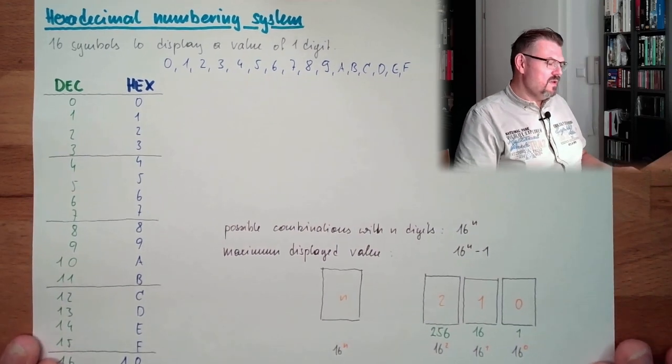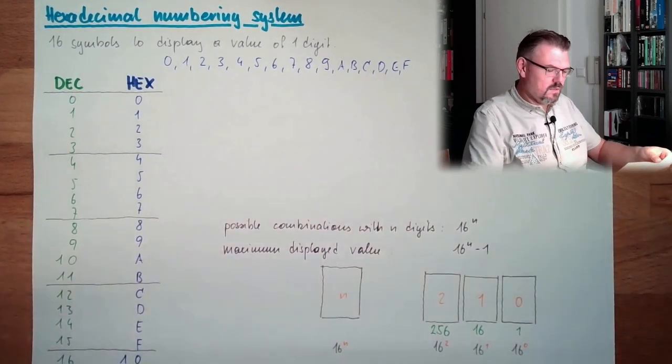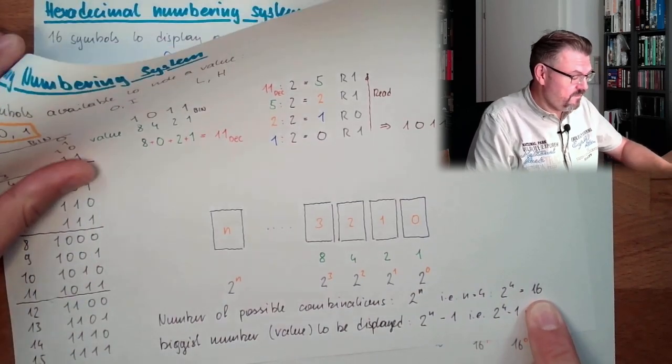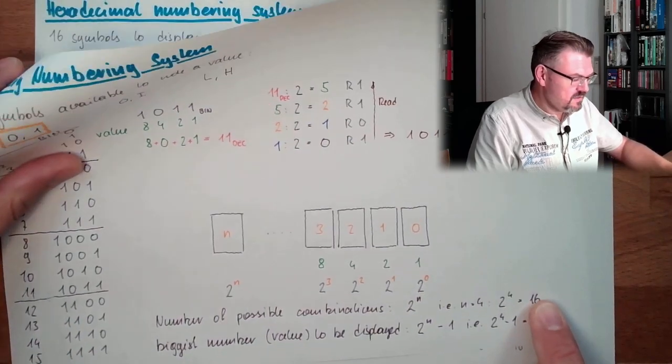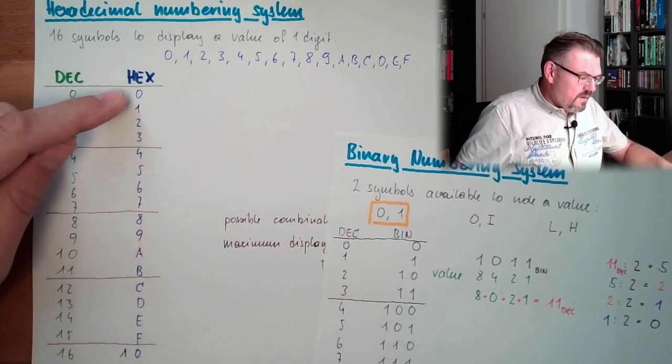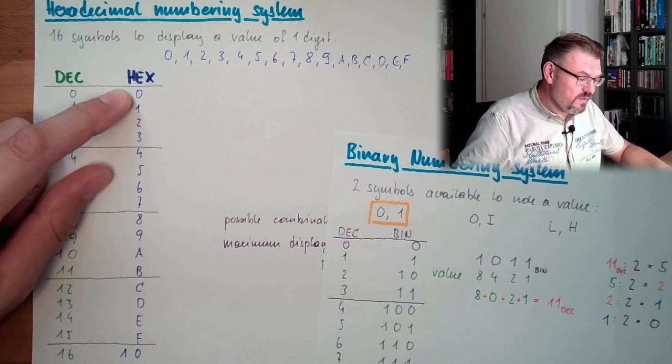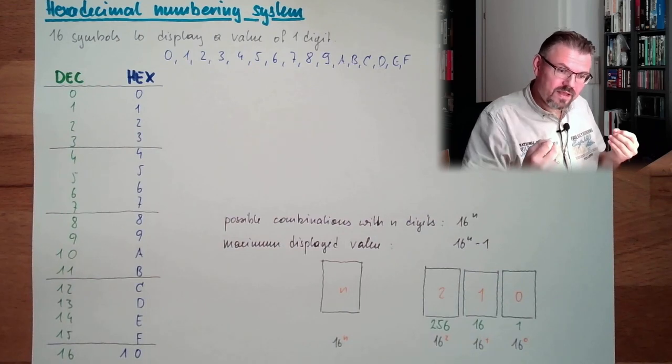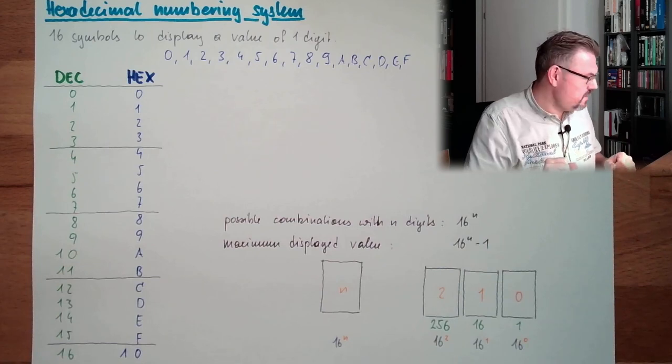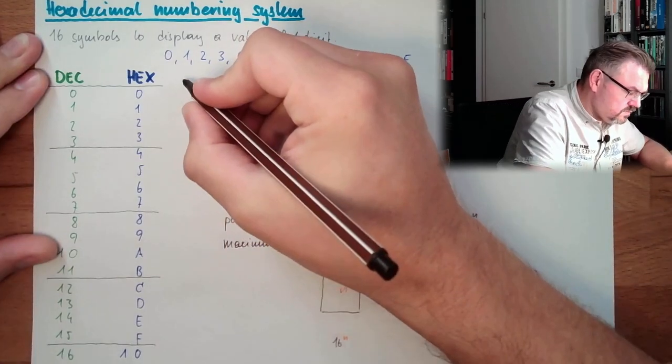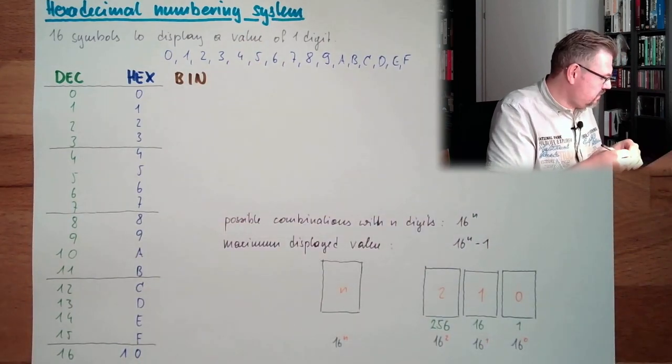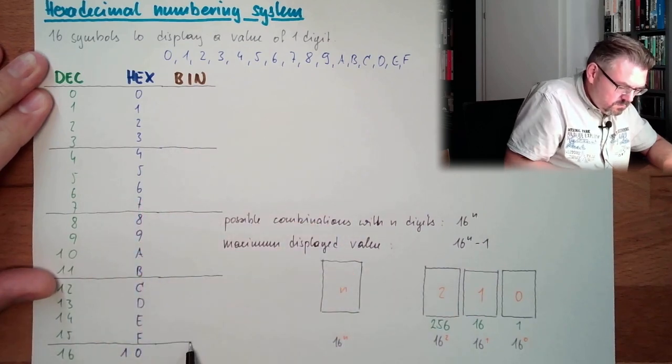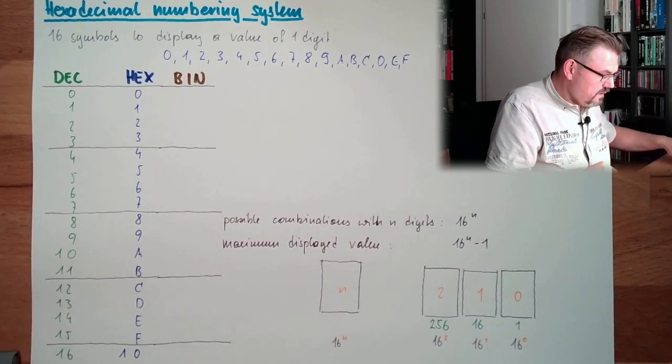So why is the hexadecimal system that important? Because if you remember, in the binary numbering system, with 4 digits, we have 16 different possibilities. These are the 16 possibilities with 4 digits. This is what I wrote down last time. And here we have 16 different symbols. This means a hexadecimal value, one digit can display exactly a block of 4. So if we write the binary also, it would look like that.